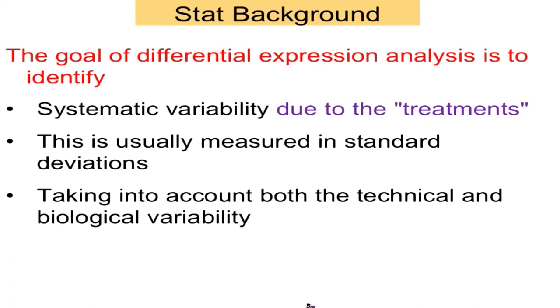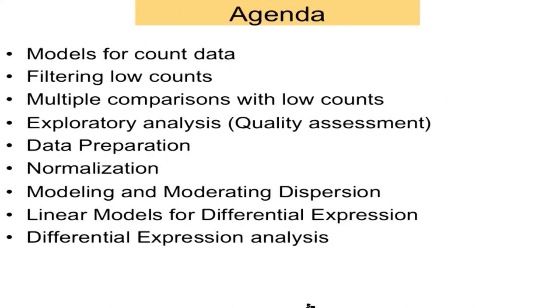I'm going to talk about models, how you deal with very low counts — which basically means if you don't have enough sequence for a feature, you just can't do a differential expression analysis. We'll look at some graphical diagnostics, data prep, normalization, and then the actual models. N_i is the number of mapped reads in sample i; π_ij is the percentage of reads for feature j in sample i. For a particular sample, as long as the percentage is small, you should be getting Poisson variation.